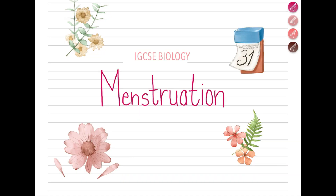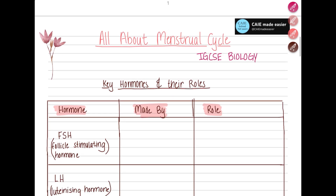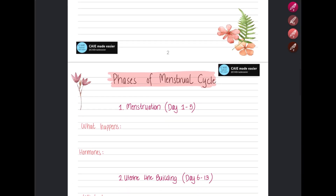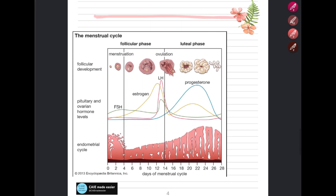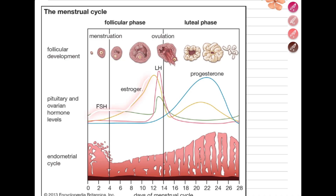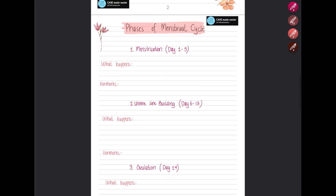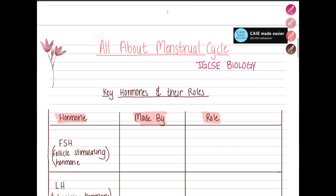Hello and welcome back to another video. This video is about IGCSE biology and we'll discuss all about menstruation. We will see what are some key hormones and their roles in the menstrual cycle, the different phases of the menstrual cycle, the menstrual cycle as a graph, and what happens to hormone levels as the menstrual cycle proceeds.